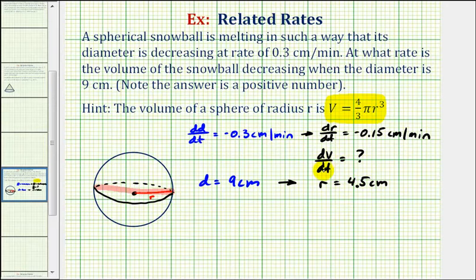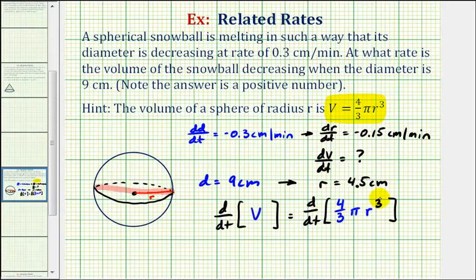To find dV/dt, we're going to differentiate the volume formula with respect to t. Because we're differentiating with respect to t, we'll have to perform implicit differentiation, which means we'll have an extra factor of dr/dt. The derivative of V with respect to t would just be dV/dt. On the right side, since four-thirds and pi are constants...